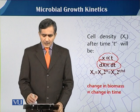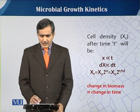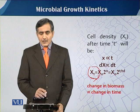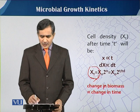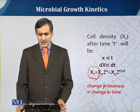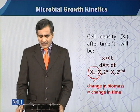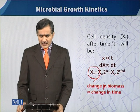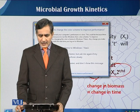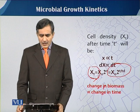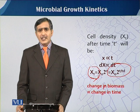If x is the biomass at time t, and x₀ is the biomass used as inoculum at the time of inoculation, and n is the number of generations, then we can write the change in biomass with respect to time. x₀ is 2 raised to the power of t over t_d, where t_d is the doubling time.